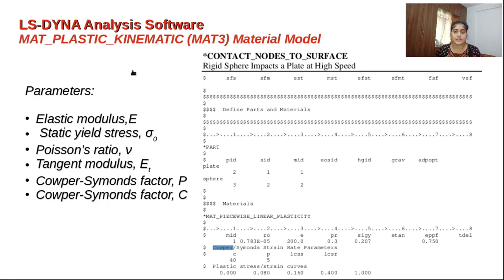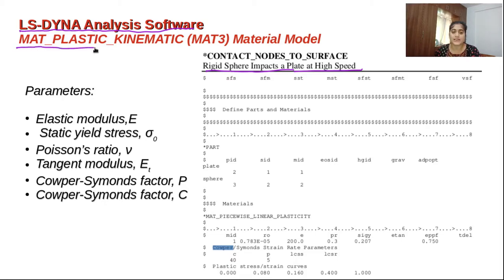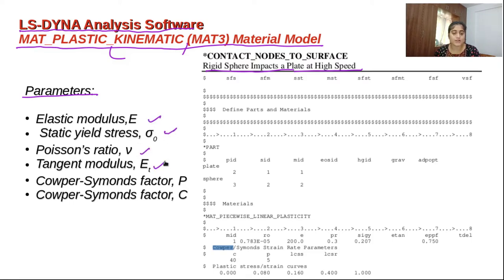As we have discussed about the Copper Cement parameters, if we are doing an experiment using LS-Dyna analysis software and doing some experiments — this is one example in which they are doing a rigid sphere impact of a plate at high speed. What material properties are required as an input? If you are using the mat plastic kinematic material model, this kinematic model handles high strain rate. The parameters required as input are elastic modulus, static yield stress, Poisson's ratio, tangential modulus, and these two are the strain rate affected Copper Cement factors.